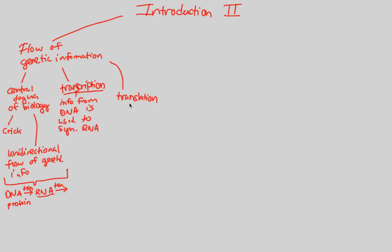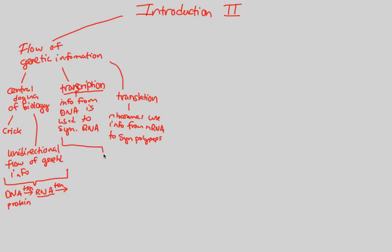Translation, which we'll abbreviate as TSN, is defined as follows: ribosomes, which are the protein-producing factories of cells, use information from mRNA specifically — we'll explain what mRNA is in just a second — to synthesize polypeptides, and thus proteins. The most important thing to understand is that underneath both transcription and translation, you can extend this whole central dogma knowledge.